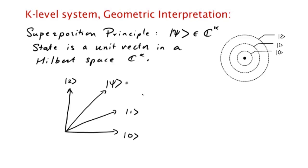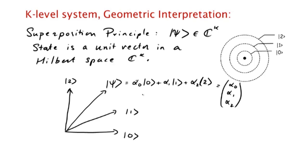And if we write |ψ⟩ as α₀|0⟩ + α₁|1⟩ + α₂|2⟩, we could also have written it as the column vector (α₀, α₁, α₂) in standard vector notation, where α₀, α₁, α₂ are complex numbers, so it belongs to a three-dimensional complex vector space.